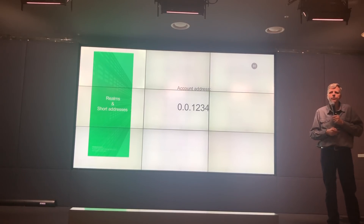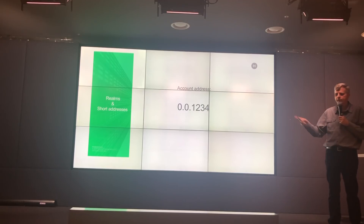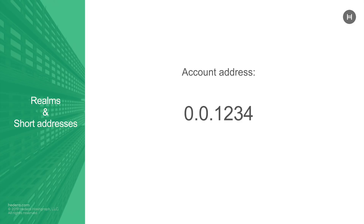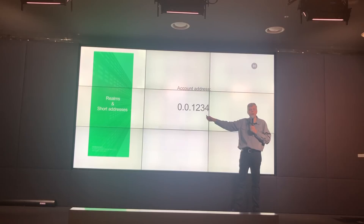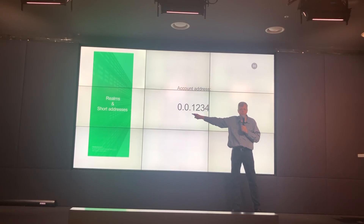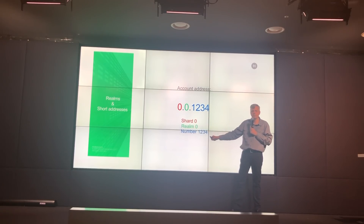Let's talk about realms and short addresses. I just thought you might like to see what an address looks like — that's a real address in our system. That is an account. We don't do unspent transactions; we do accounts, and accounts have an account number that is short — just three numbers with dots. This is a cryptocurrency account. We also allow you to store smart contracts and files, each with an ID that looks the same. The three numbers are the shard, the realm, and a number.